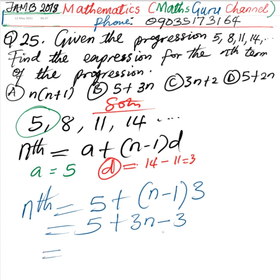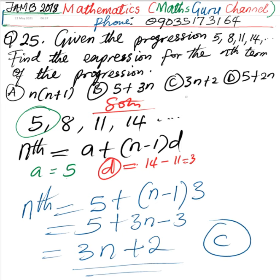We are going to have 3n. 5 minus 3 is going to be equal to 2. The correct option is C, 3n plus 2.